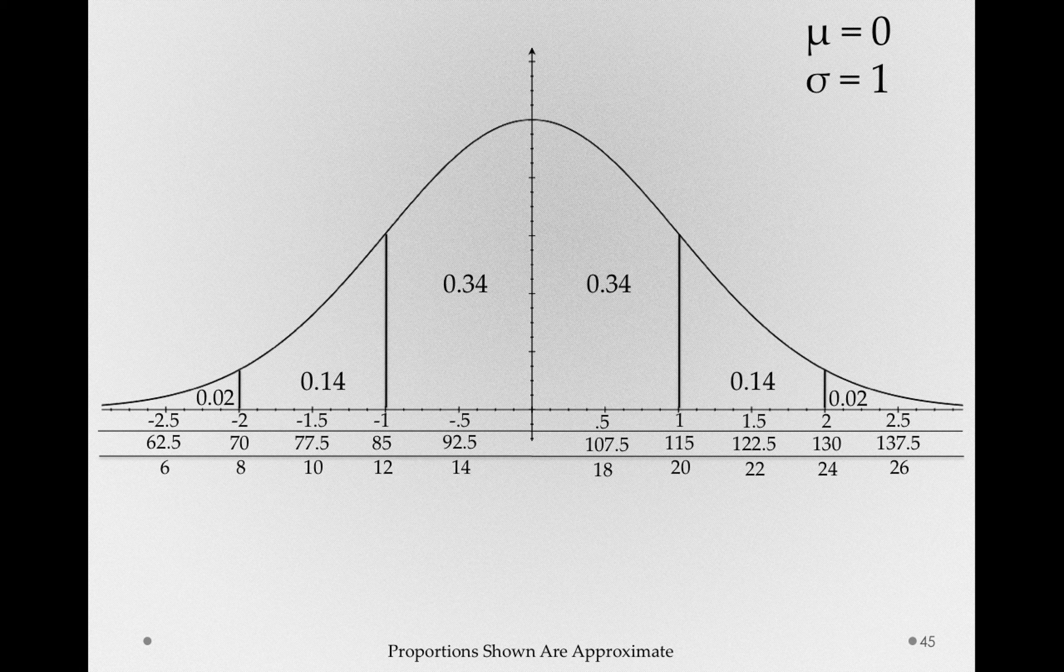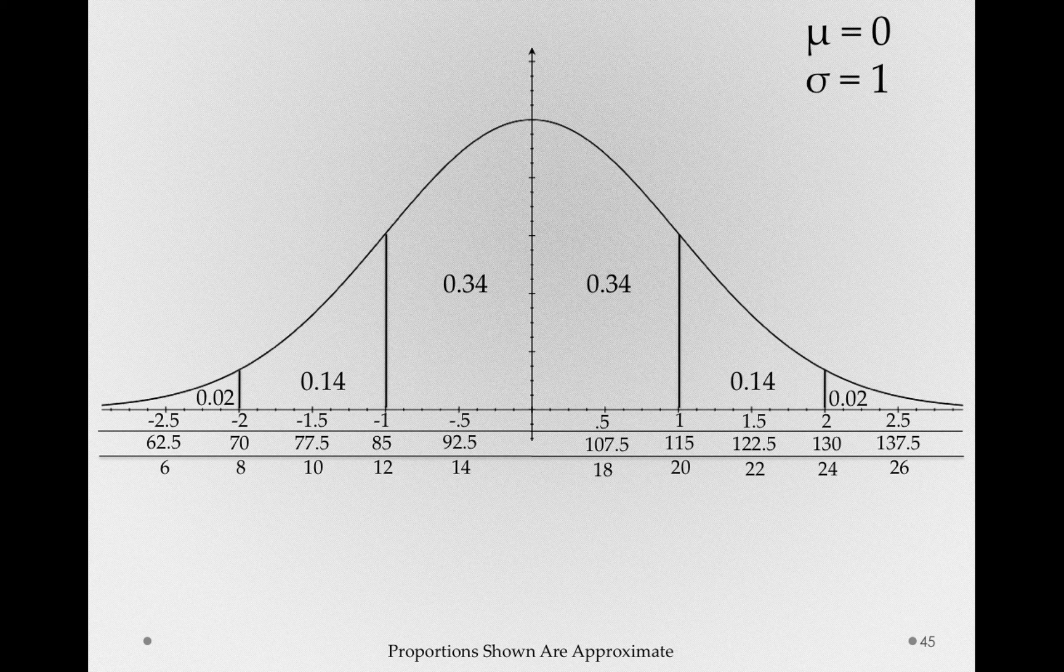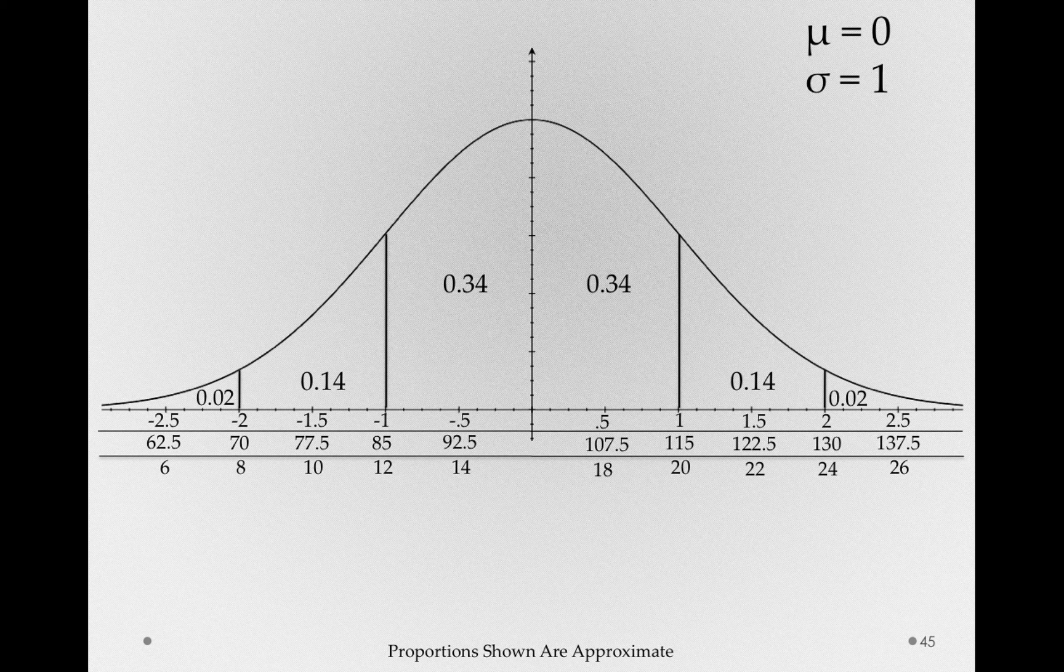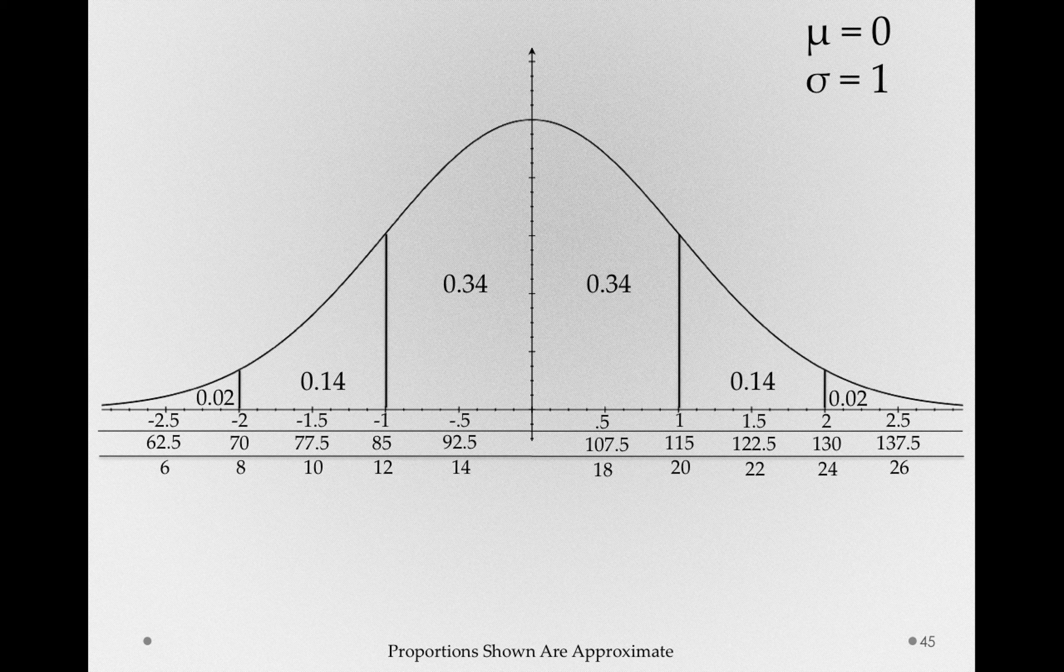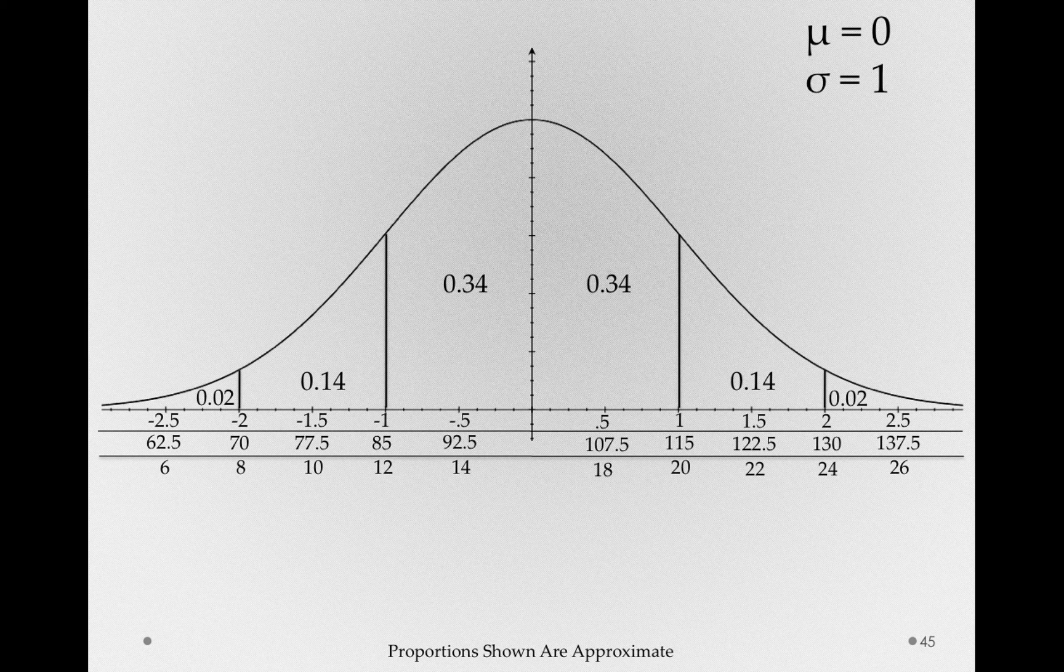Remember I said we didn't actually have to open a data table and count up the number of observations? This is what I meant. We know the proportions of a normal distribution, so if you can convert a question to be a question about a z-score, and you know that the distribution is normally distributed, you can answer the question directly.